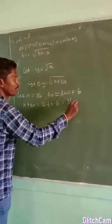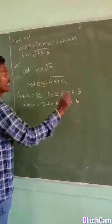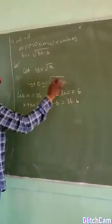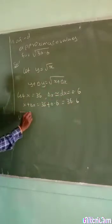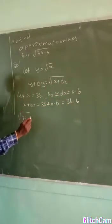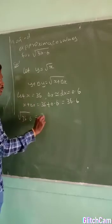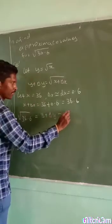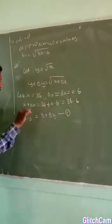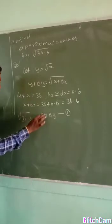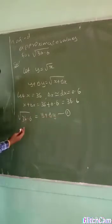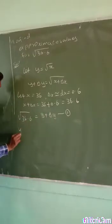So instead of x plus delta x, I use this value, square root of 36.6. That is, I assume already y plus delta y. I call this equation 1. Our aim is to find the value of y and delta y. If I add both, you are able to get approximate value for square root of 36.6.